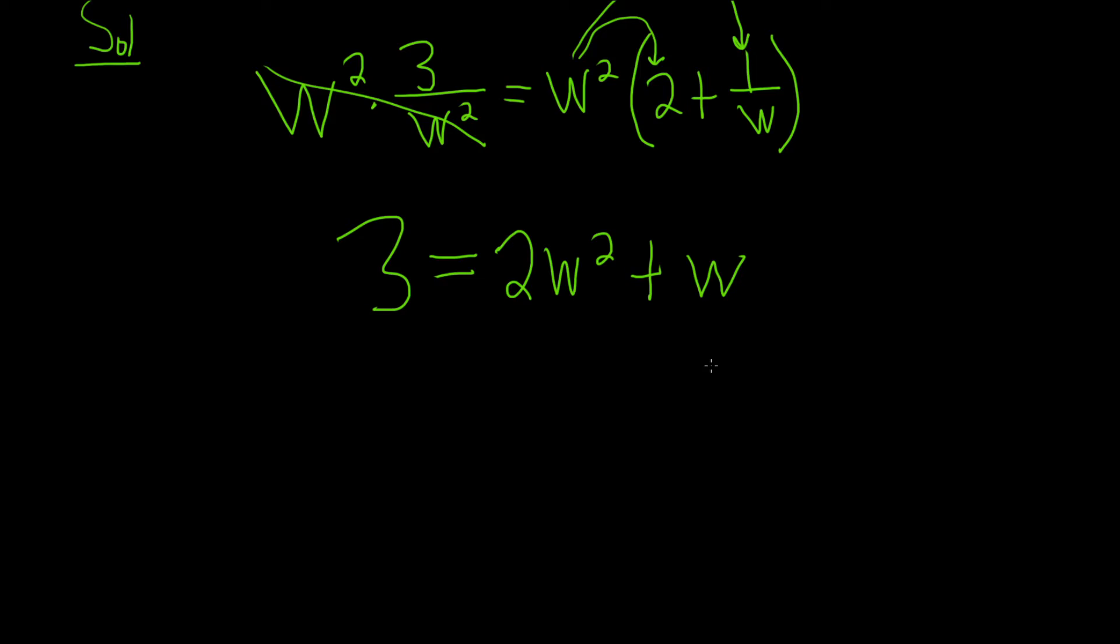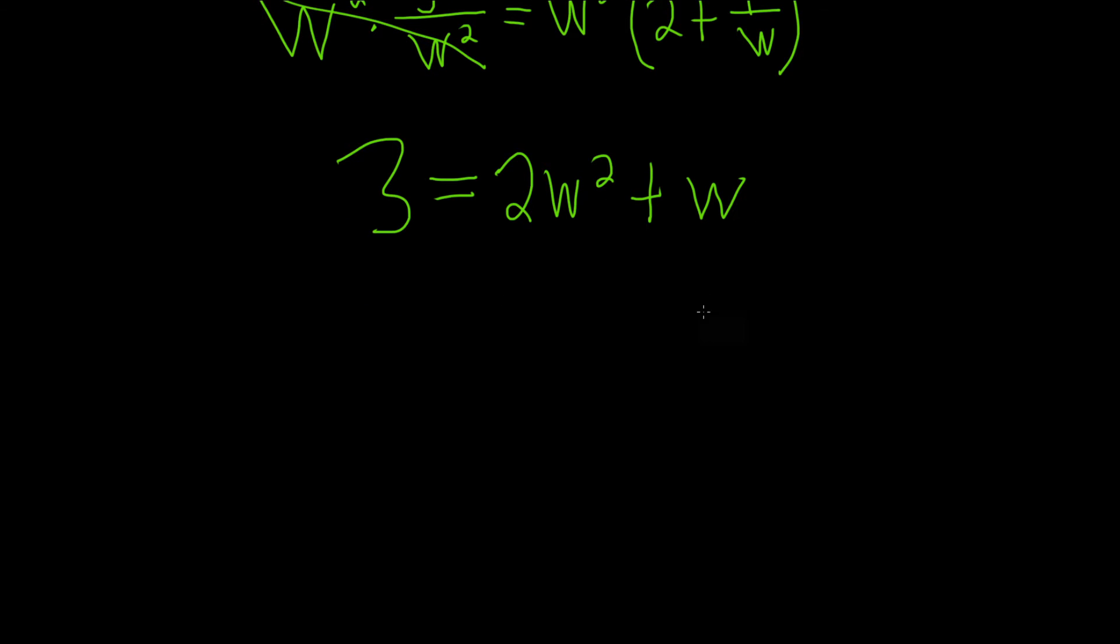Oh, this is interesting. We have a quadratic equation in W. So whenever you have a quadratic equation, you want to set it equal to 0 to solve it. So let's subtract 3 from both sides. So we have 2W squared plus W minus 3 and this is equal to 0.